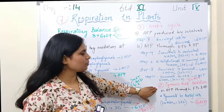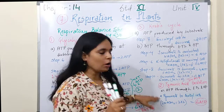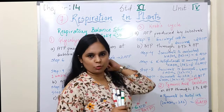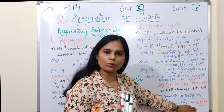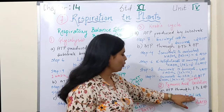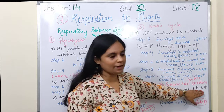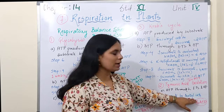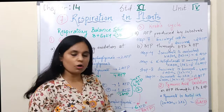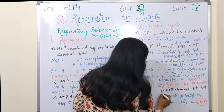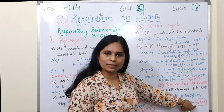Let's come to the next, that is pyruvate acid oxidation. Pyruvate acid oxidation mein 2 molecules bante hain NADH2 ke. Ye jo 2 molecules NADH2 ke bante hain, that will form total 6 ATP — via electron transport system and oxidative phosphorylation. Pyruvate se acetyl coenzyme A jab banta hai, us samay 2 molecules of NADH2 bante hain, so this is total 6 ATP.